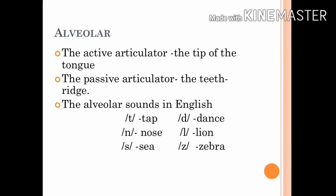In the production of alveolar sounds, the tip or the blade of the tongue and the teeth ridge — also called the alveolar ridge — are involved. The active articulator is the tip or blade of the tongue and the passive articulator is the teeth ridge. The sounds T, D, N, L, S, and Z are the alveolar sounds that occur in English.